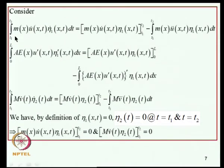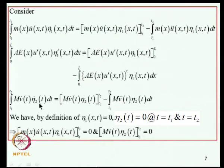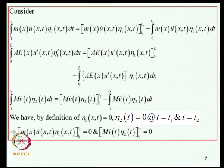We integrate by parts the terms involving time derivatives of the variations. For the integral from T1 to T2 of M*U_dot*eta_1_dot dt, integration by parts gives two terms. Similarly for terms involving spatial derivatives of the variation. For the variable V, the term with eta_2_dot also yields two terms by parts integration. Since eta_1 and eta_2 vanish at T1 and T2, certain boundary terms go to zero.